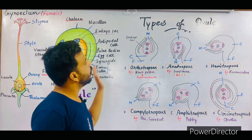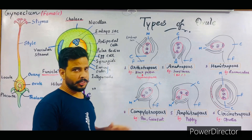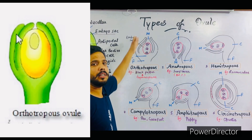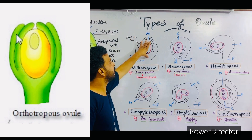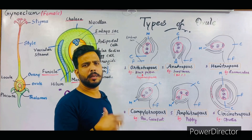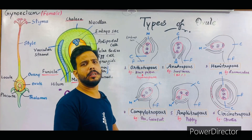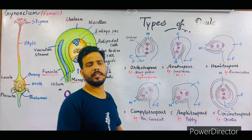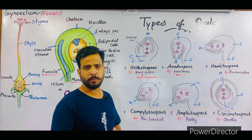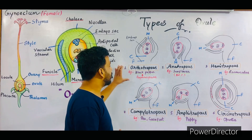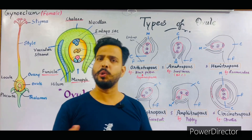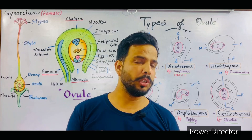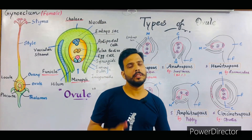The first type is orthotropous. This type of ovule is straight — meaning the micropyle, chalaza, and funicle are present in a straight line, with the embryo sac situated in the center. This type of ovule is found in some angiosperms and all gymnosperms. An example from angiosperms is black pepper, or Piper nigrum. In gymnosperms, examples include Cycas, Pinus, and Ephedra. An important exam question: in Cycas, which type of ovule is present? The correct answer is orthotropous.